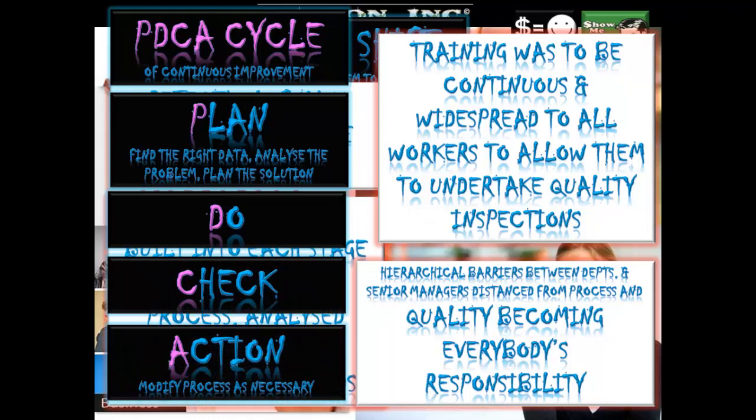To implement a quality assurance program, a PDCA cycle of continuous improvement is introduced — to plan the production process to ensure that quality is exactly what consumers expect. There's planning, where the right data is looked at, problems are analyzed, and solutions are planned. Then implement that plan, check that it has been implemented correctly, and then action to modify any processes as necessary.